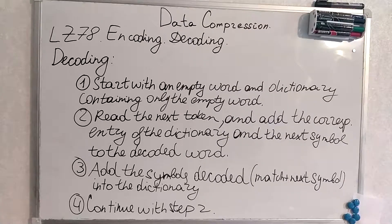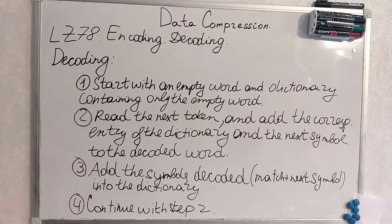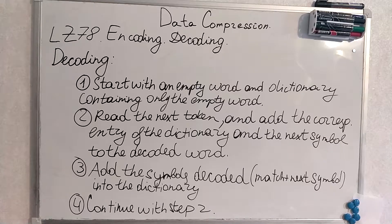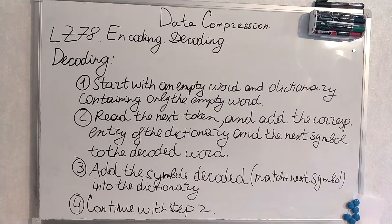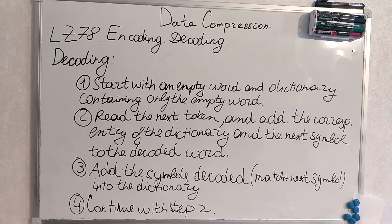As you have seen, LZ78 encoding was extremely simple and decoding is also — I think even giving an example is redundant here. It's the same but the other way around. We start with an empty word and a dictionary containing only the empty word. We read the next token and add the corresponding entry of the dictionary and the next symbol to the decoded word. We add the decoded symbols into the dictionary and continue with step 2 until end of sequence. When we decode, we are given these tokens and we just form the table with them.